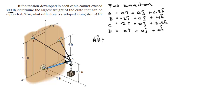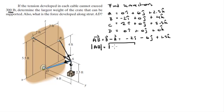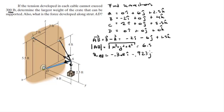To find vector AB, subtract A from B, which gives (-2i - 6j + 1.5k). The magnitude is found by taking the square root of (-2)² + (-6)² + (1.5)², which gives 6.5. So the unit vector AB is (-0.308i - 0.923j + 0.231k).